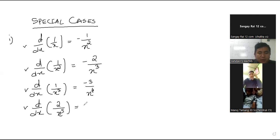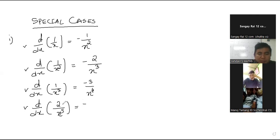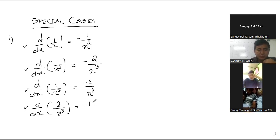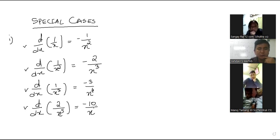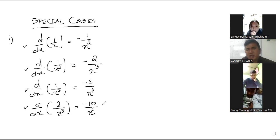Differentiation of two divided by x to the power five — the answer will be negative because the function is in the denominator. Five times two becomes 10, divided by x to the power — the power of x will increase by one, which becomes six. So the answer is negative 10 divided by x to the power six.